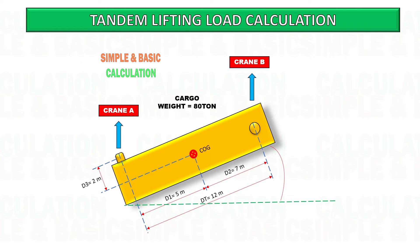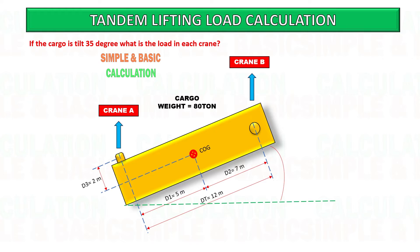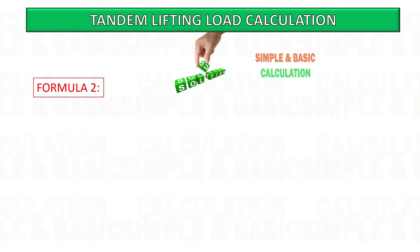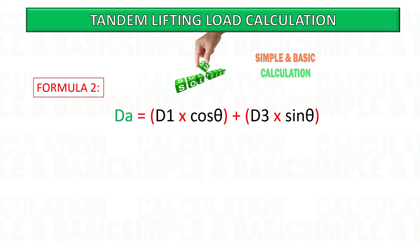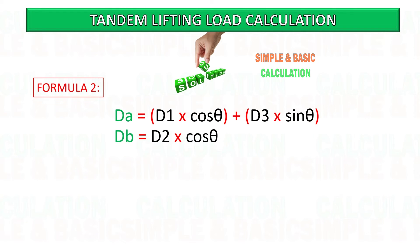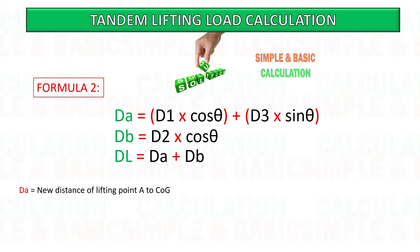In the next example, let's tilt the cargo at 35 degrees from the horizontal line and calculate the load in crane A and crane B. Formula number two: this is the formula to calculate the new distance between lifting point A and B to the center of gravity of the cargo, based on the horizontal degree or tilt angle.